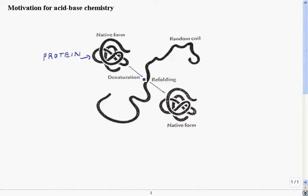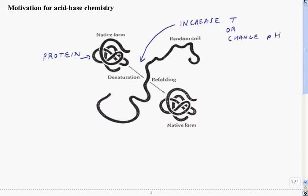So what is it that we can do to denature this protein? One thing we can do is increase the temperature — we heat the system up and we can get the protein to unfold into this random coil structure. But another thing we can do is change the pH of the system. And how is it that changing the pH can cause this protein to unravel? That's what we're going to talk about for the next few minutes.